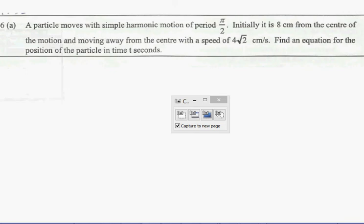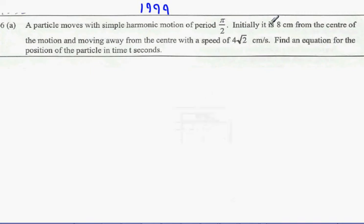Hey, today 1999. A particle moves with simple harmonic motion of period π/2. It is initially 8 cm from the centre, so x equals 8, from the centre of the motion and moving away from the centre with a speed of 4√2 cm per second. Find an equation for the position of the particle after t seconds.